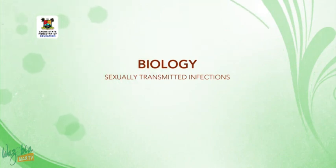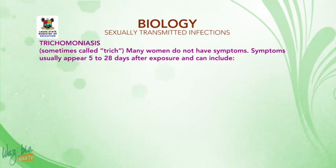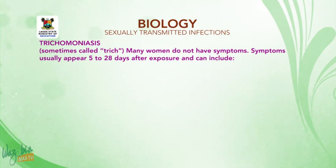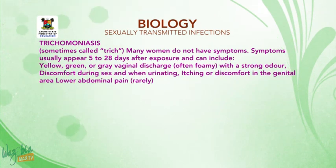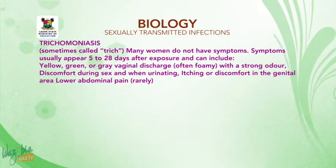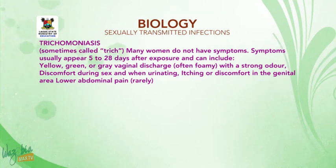Trichomoniasis, sometimes called trich: many women do not have symptoms. Symptoms usually appear 5 to 28 days after exposure and can include yellow-green or grey vaginal discharge, often foamy with a strong odor, discomfort during sex and when urinating, itching or discomfort in the genital area, and lower abdominal pain (rarely).